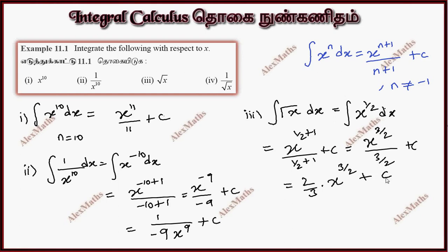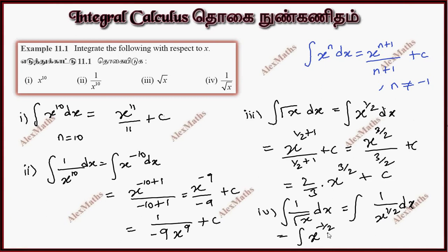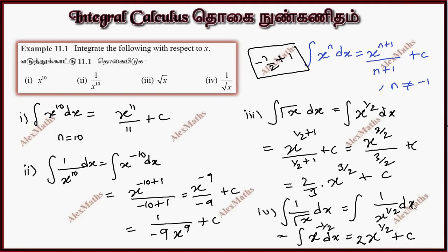Subdivision 4: integral of 1 by root x dx. We rewrite this as x power minus half dx. Applying the formula: x power minus half plus 1, divided by minus half plus 1. This gives x power half by half, which equals 2 x power half plus c.